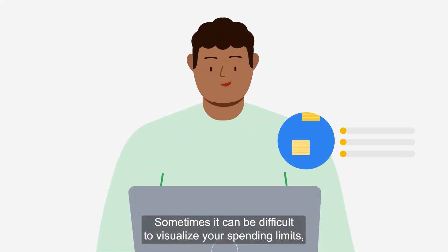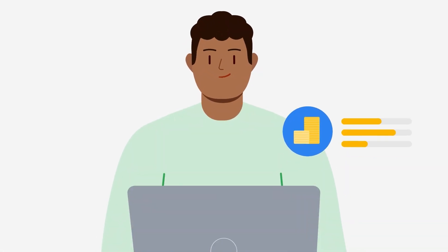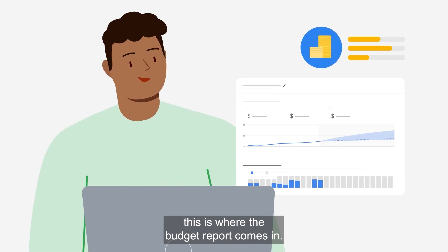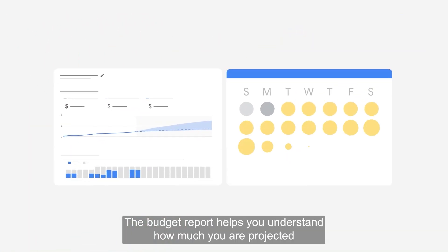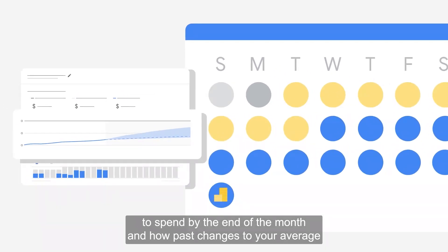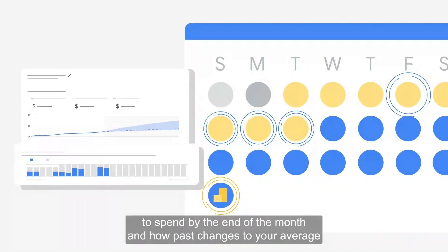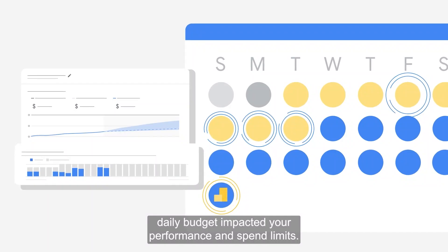Sometimes it can be difficult to visualize your spending limits. This is where the budget report comes in. The budget report helps you understand how much you're projected to spend by the end of the month and how past changes to your average daily budget impacted your performance and spend limits.